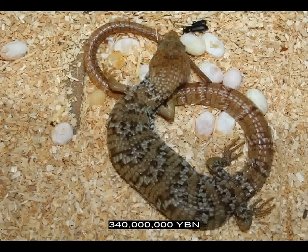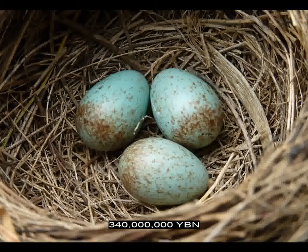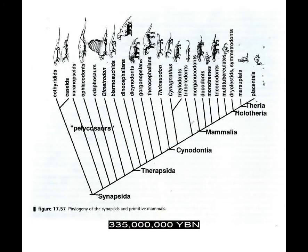All living amniotes lay hard-shelled eggs except most mammals and some snakes and lizards where egg-laying has been replaced by live birth. The eggshell of amniotes may be flexible, like the eggs of many lizards, or mineralized and hard, like bird eggs. The amniota divide into the Sauropsida and the Synapsida. The sauropsids have two major lineages: the para-reptilia—turtles—and the eureptilia—dinosaurs, crocodiles, and birds. The synapsids also have two major lineages: the pelycosaurs, sail-backed amniotes, and the therapsids, mammal-like amniotes. The synapsids Pelycosauria evolve—ancestor of Edaphosaurus and Dimetrodon. The earliest extant amphibians, caecilians, evolve.